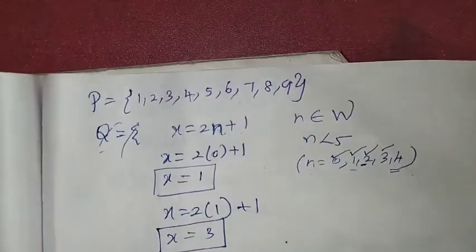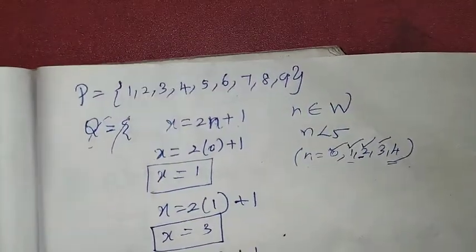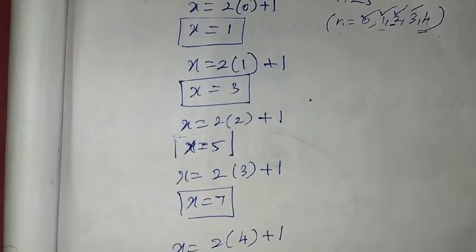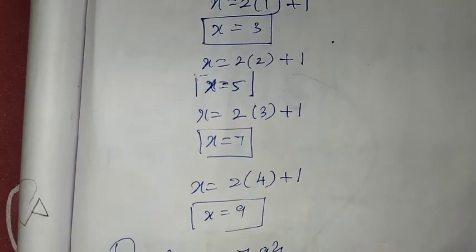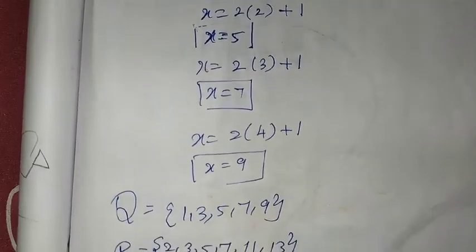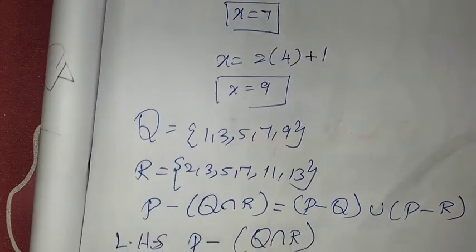If you understand the concept properly, the sums are very simple. Be very careful with the set builder form. The Q set values for n are 0, 1, 2, 3, 4.